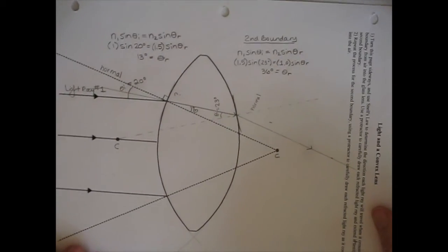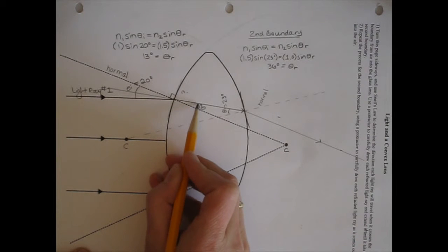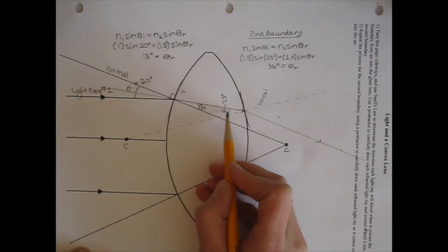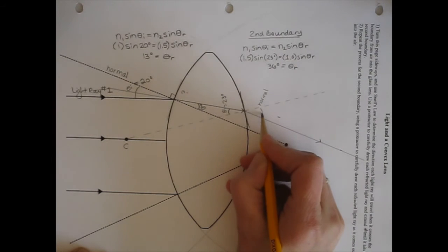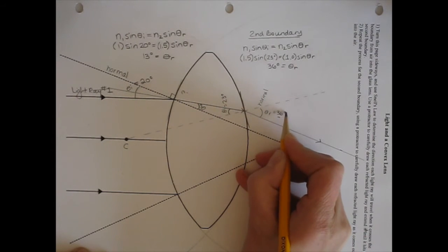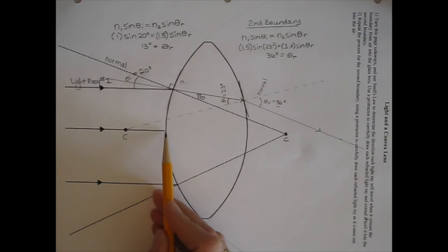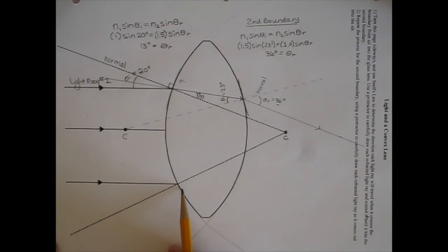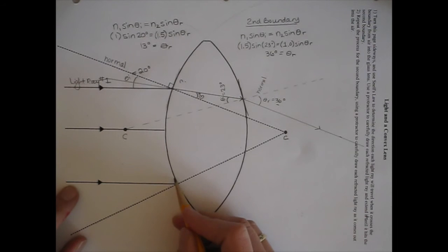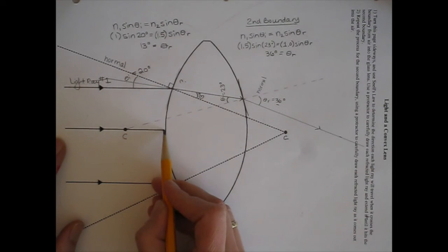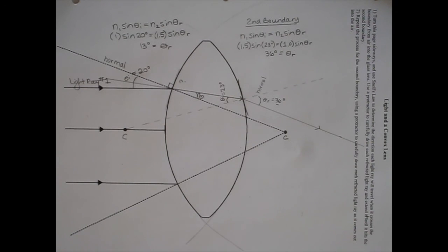So for light ray number one, we're done. We found the incident angle at the first boundary, calculated the refracted angle inside the glass lens, then measured the incident angle at the second boundary and used Snell's Law to calculate a refracted angle of 36 degrees, which we drew in. Your next task is to repeat this for light ray number two and light ray number three. Light ray number three will be a very similar process to light ray number one. Light ray number two will be much easier because it is hitting the boundary straight on.